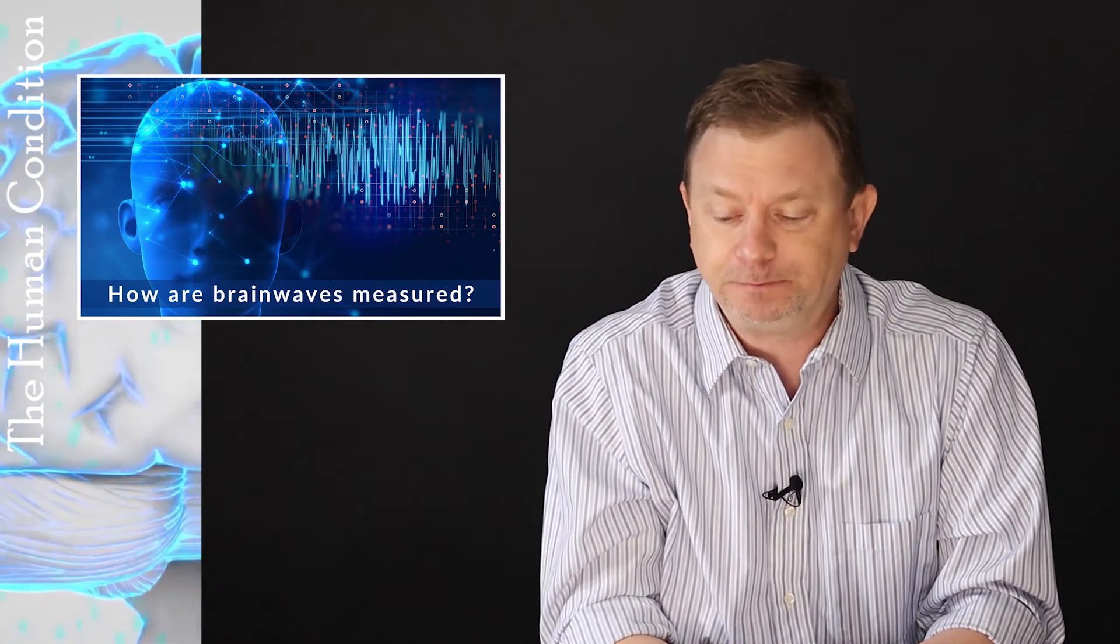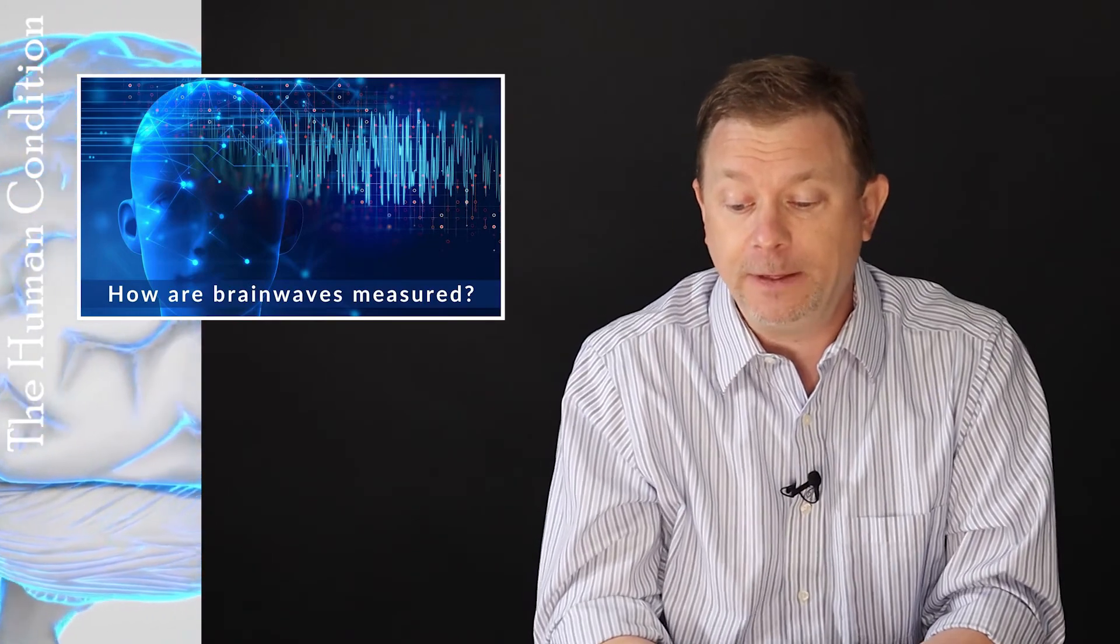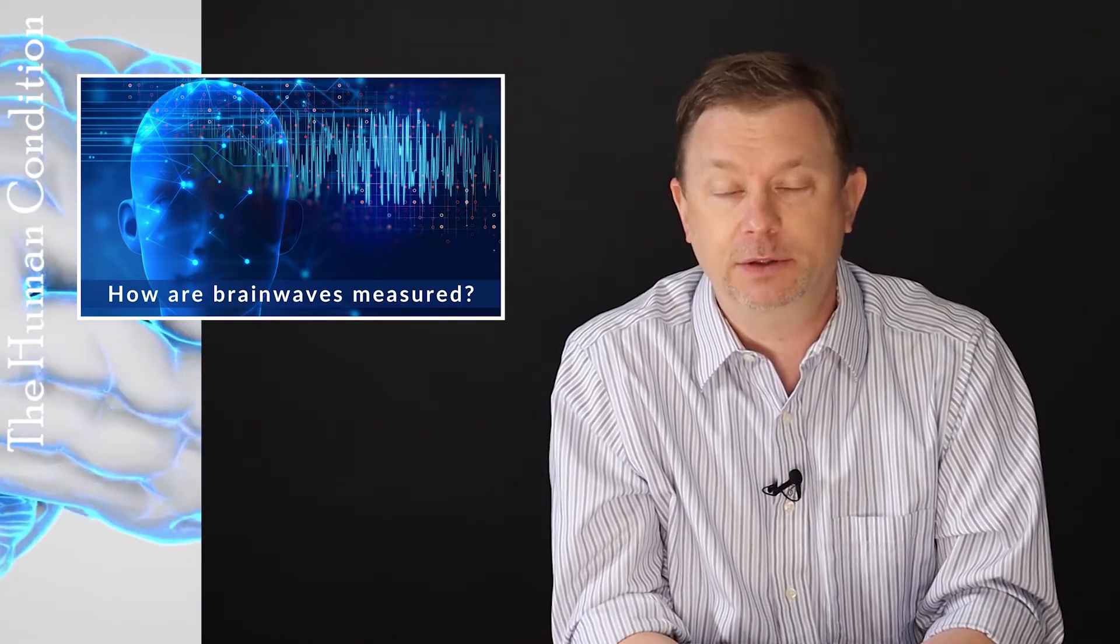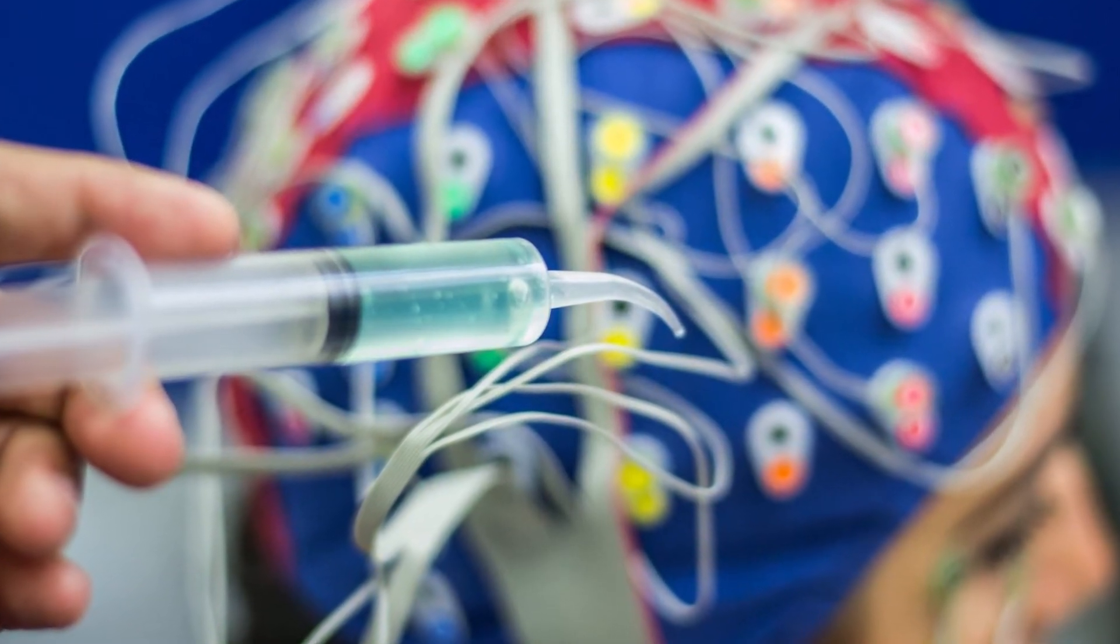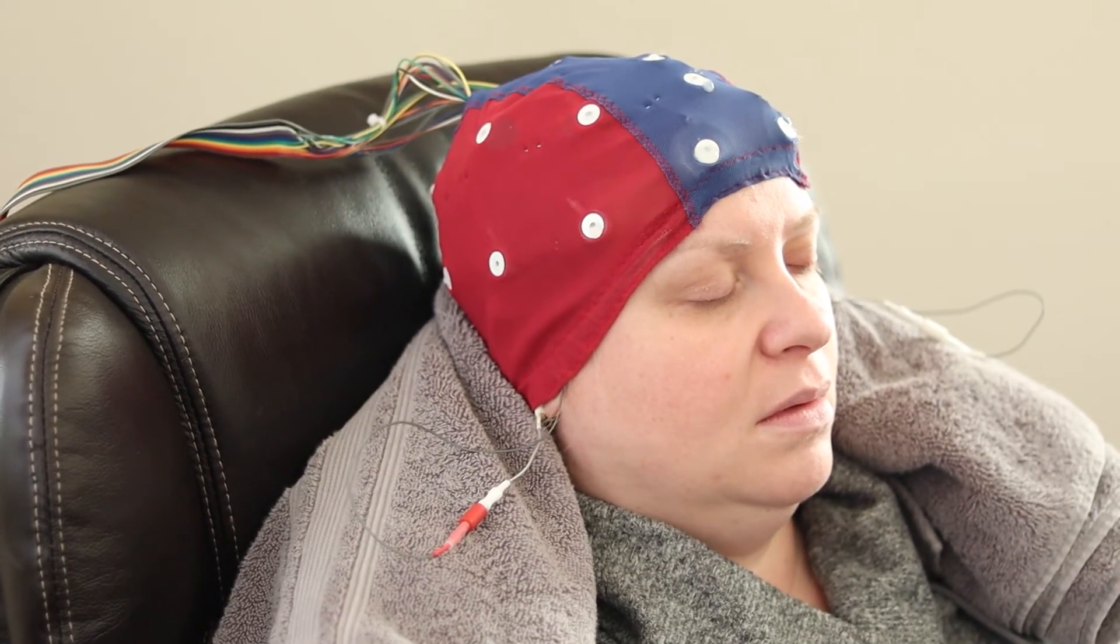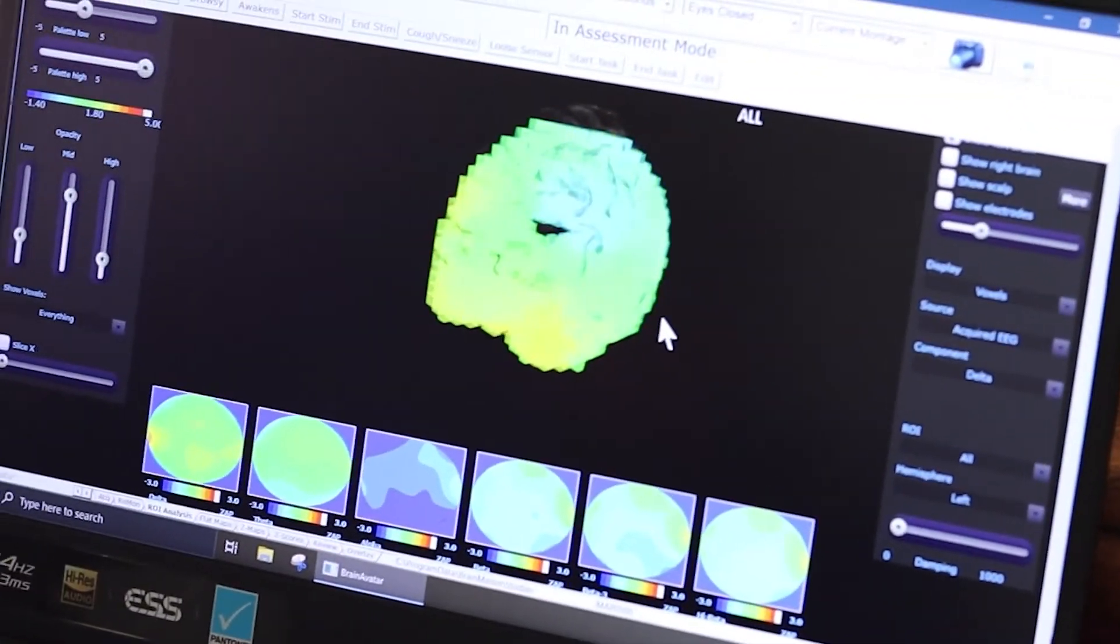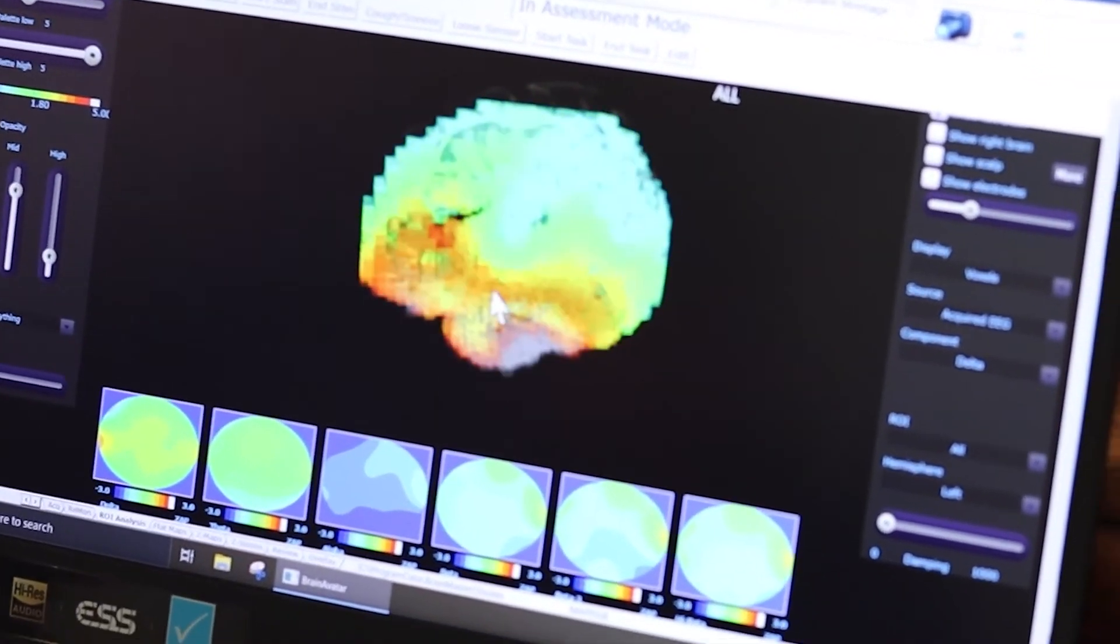But the general idea is that brain waves are measured by having a conducting gel or paste with a tin or gold or silver electrode that picks up the brain waves, carries them through a wire, into an amplifier, into a computer, and then we can make tracings, and ultimately images.